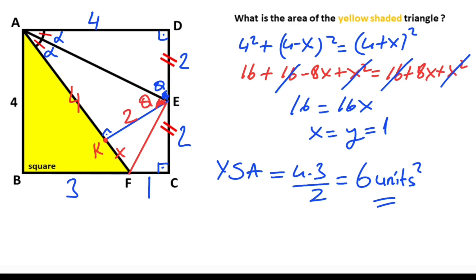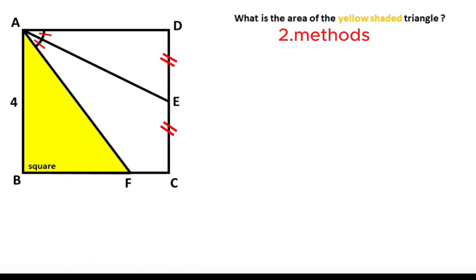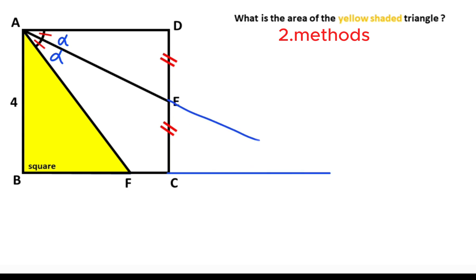That was the first method. Now we will calculate the area of the triangle using the second method. First, let's call these two angles alpha. If we extend from corner C through point E like this, let's call this point K. We know that these two sides are parallel — because it's a square — so if this angle is alpha, then this angle here must also equal alpha.